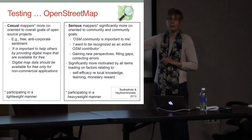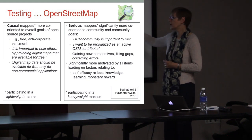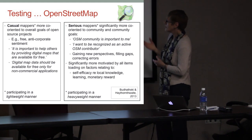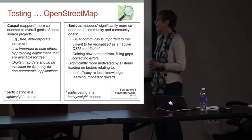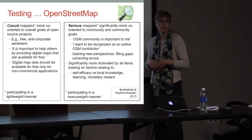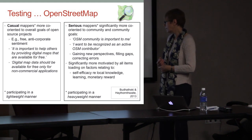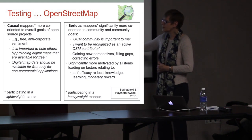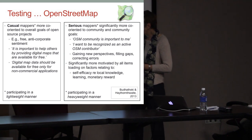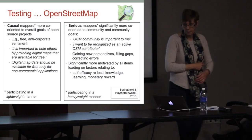Serious mappers were significantly more co-oriented to community and community goals — 'the OSM community is important to me, I want to be recognized as an active contributor' — and significantly more motivated by self-advocacy about how much they felt they knew about the local community and the desire to contribute that knowledge. So roughly speaking this is a check on participating in a heavyweight versus a lightweight manner.